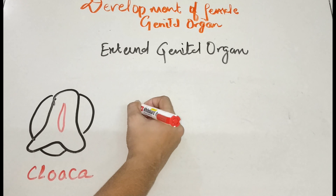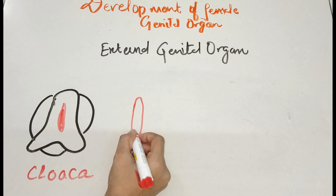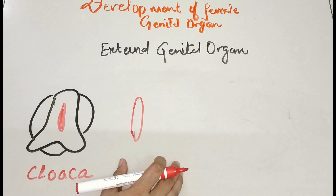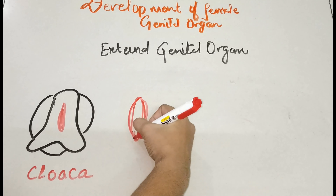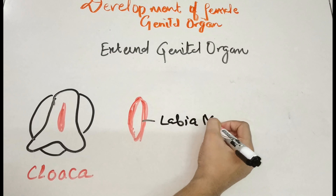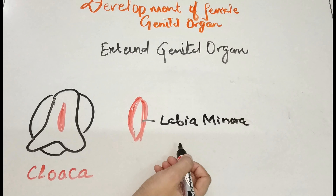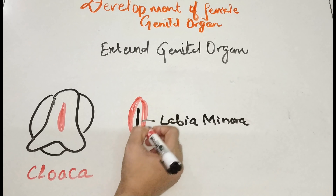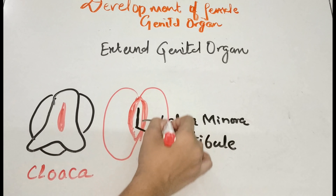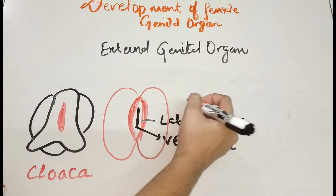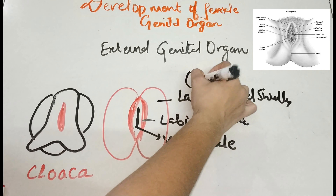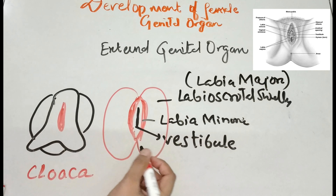The genital membrane is ruptured and the small slit opens up. In females, this genital fold will never unite. They form into two open parts. This area becomes the labia minora, and the cleft inside is called the vestibule. The labioscrotal swelling is further called the labia minora.